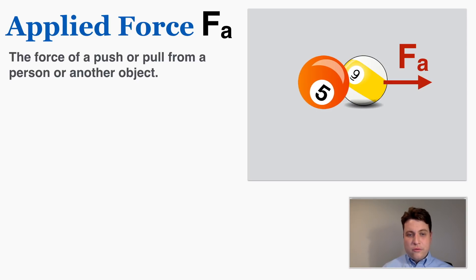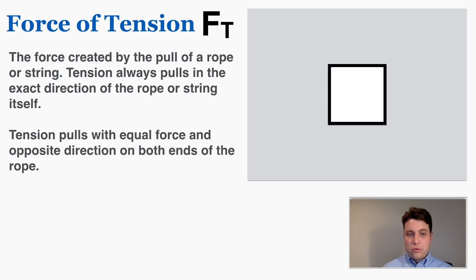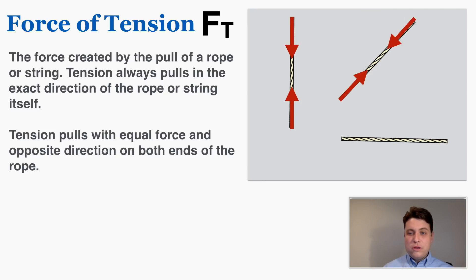Next up is the force of tension. This is the force created by the pull of a rope or string. Tension always pulls in the exact direction of the rope or string itself, and this is super important, this is going to be really important for problem solving: tension pulls with equal force and opposite direction on both ends of the rope.